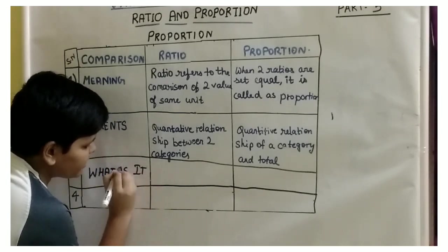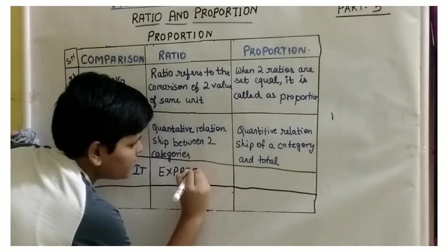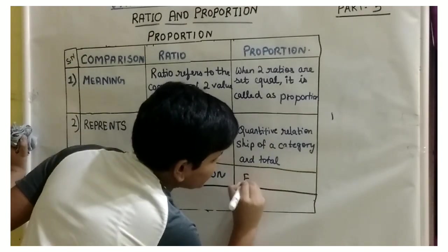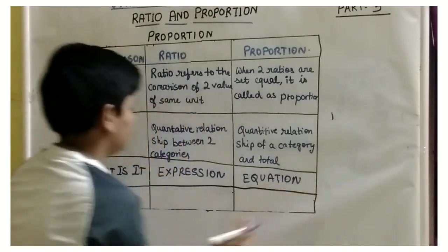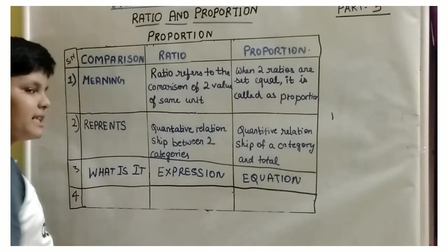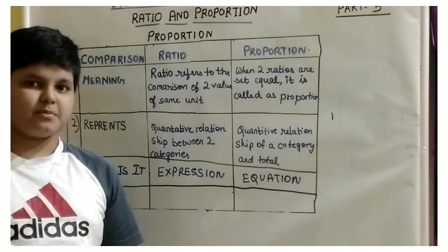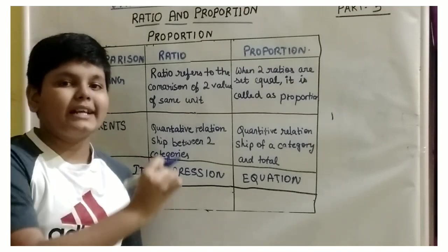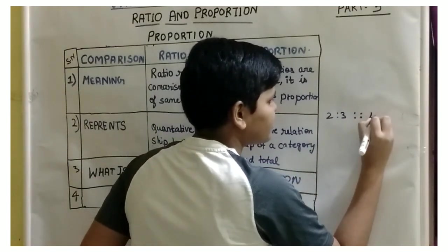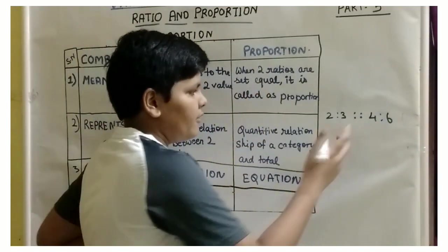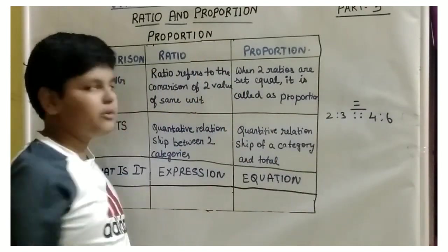Third difference: a ratio is an expression and a proportion is an equation. What is an expression? As discussed in the algebra playlist, an expression means only terms combined together. What is an equation? An equation stores the equality between two sides. So two ratios — 2 is to 3 and 4 is to 6 — when set equal form an equation. We can put an equal-to sign or the double colon symbol; both are the same. So ratio is an expression and proportion is an equation.